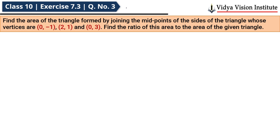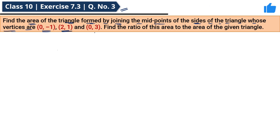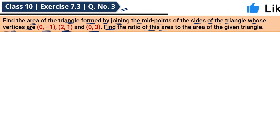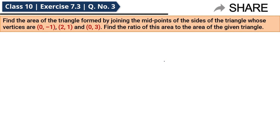Let's solve Class 10th Exercise 7.3, Question number 3. Find the area of the triangle formed by joining the midpoints of the sides of the triangle whose vertices are (0, -1), (2, 1) and (0, 3). Find the ratio of this area to the area of the given triangle. Very easy question — how do we solve this?